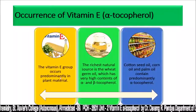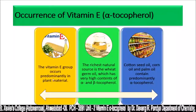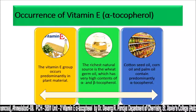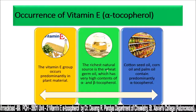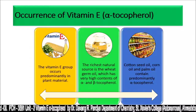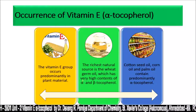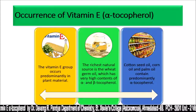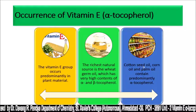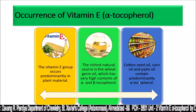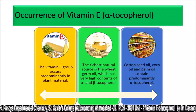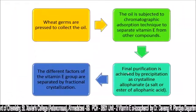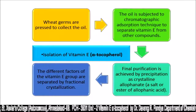Vitamin E group occurs predominantly in plant material, especially maize and dry fruits. The richest source is wheat germ oil, which has very high contents of alpha and beta tocopherols. Cottonseed oil, corn oil, and palm oil also contain predominantly alpha tocopherols.